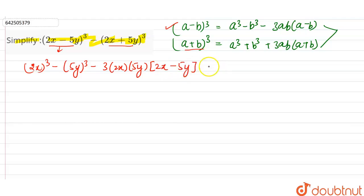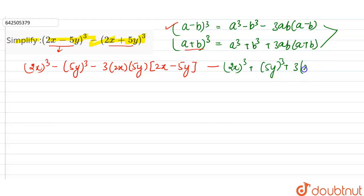Now for the second part, minus (2x plus 5y) whole cube, applying the second identity gives: (2x) whole cube plus (5y) whole cube plus 3 into 2x into 5y into (2x plus 5y).